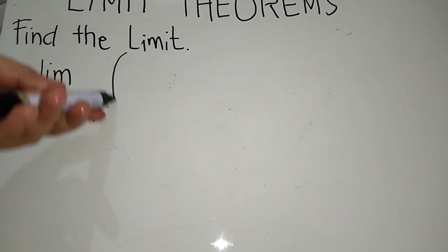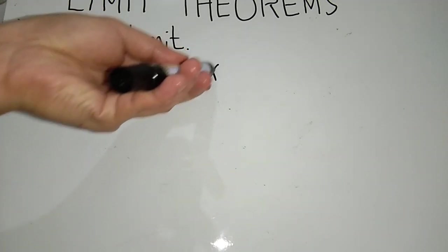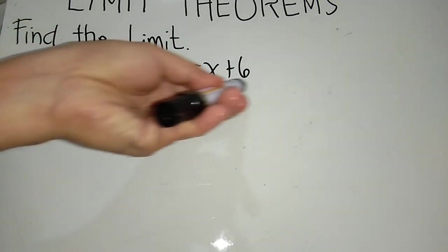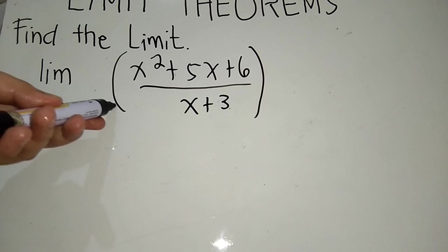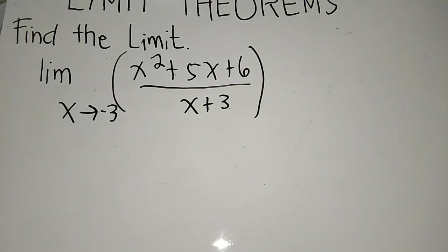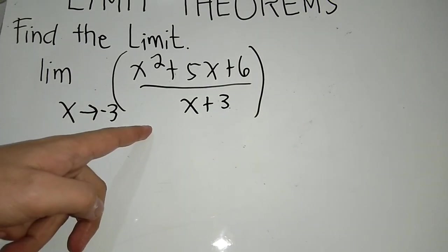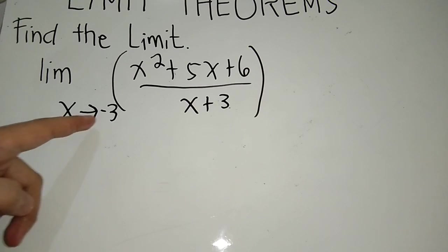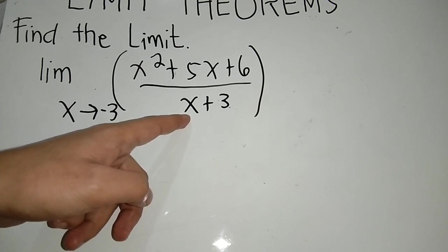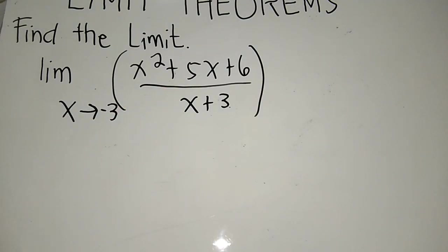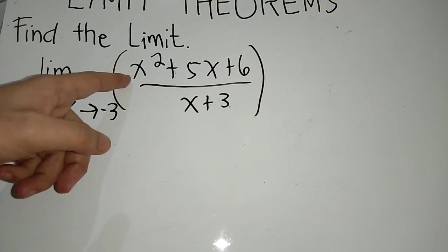Another example: assume we have x squared plus 5x plus 6 over x plus 3, where x approaches negative 3. This function is a rational function. If you directly substitute x with negative 3, your denominator will become 0, which is undefined, so we have to avoid that. Instead, we need to look at the numerator and employ the process of factorization.